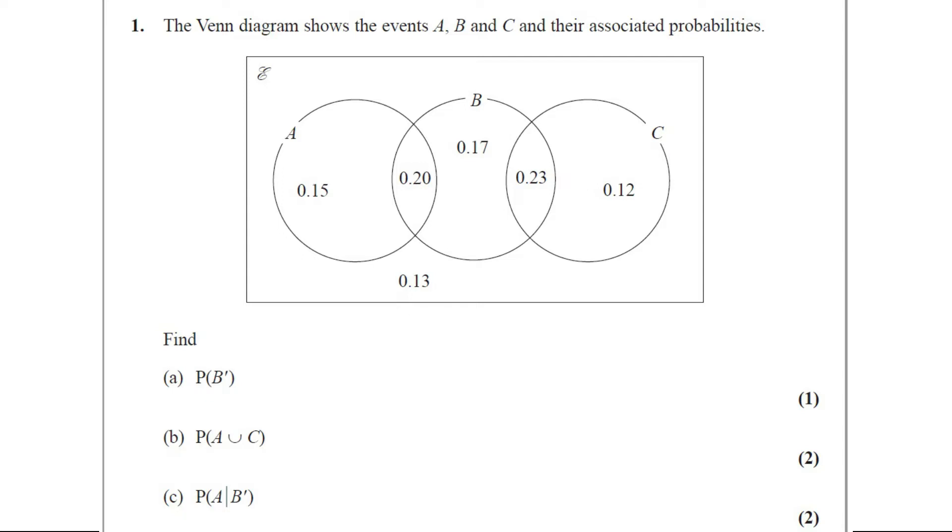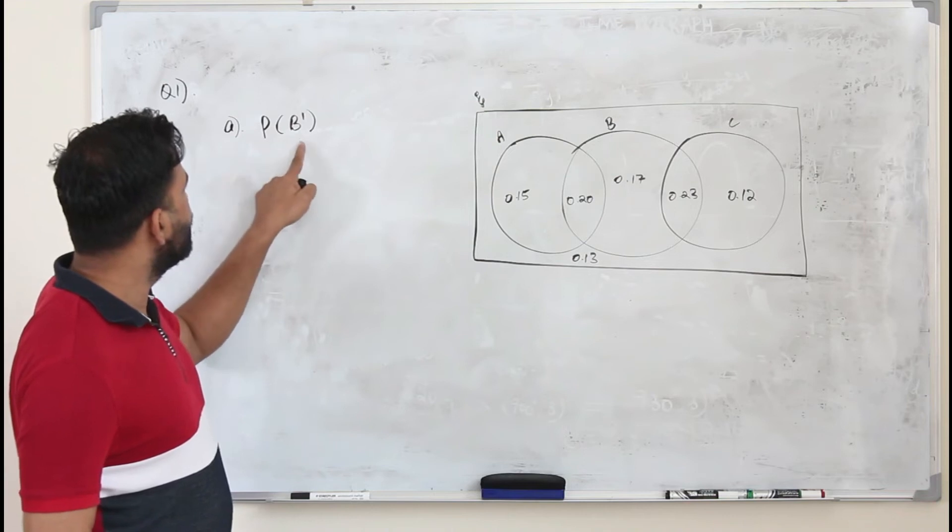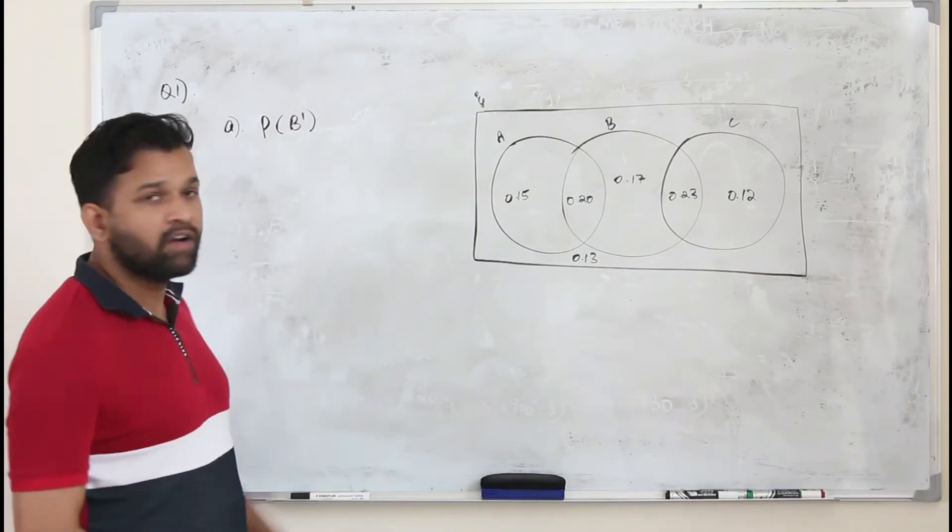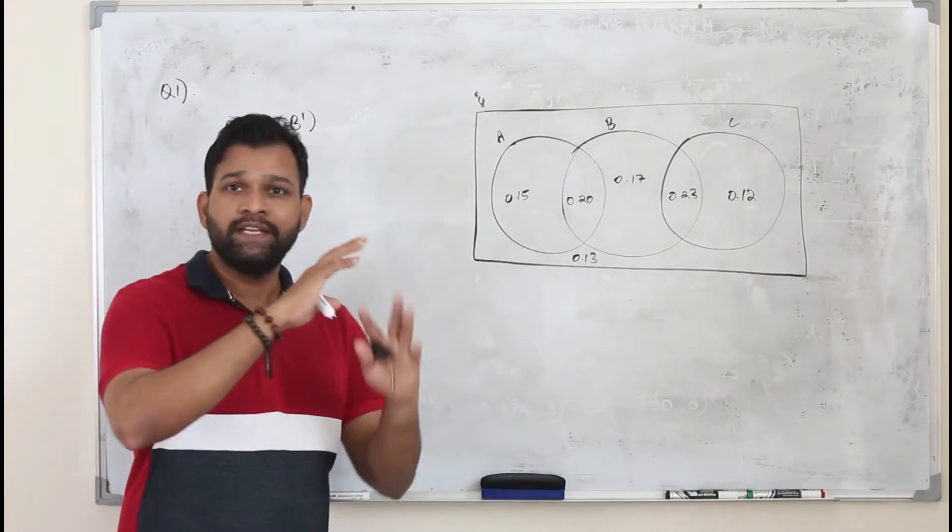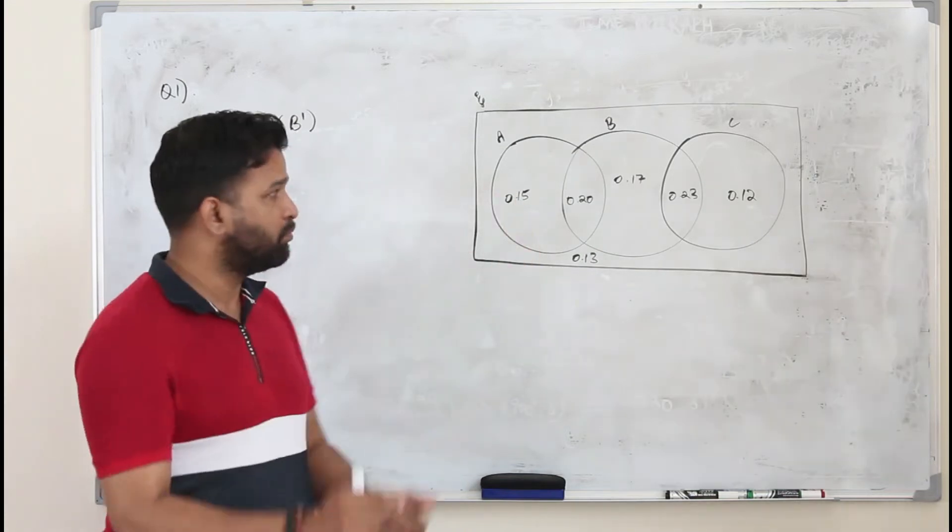Find part A: P of B dash. This question got one mark. Here they want you to find P of B dash, B complement. So you have to take everything, all the probabilities except B.